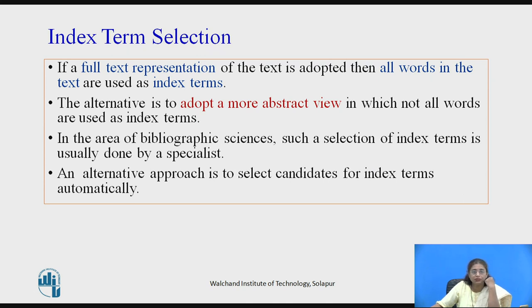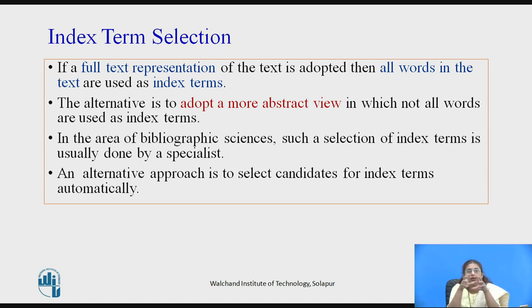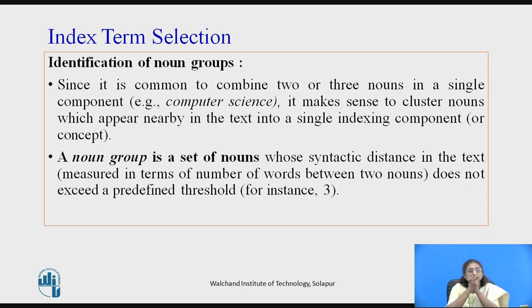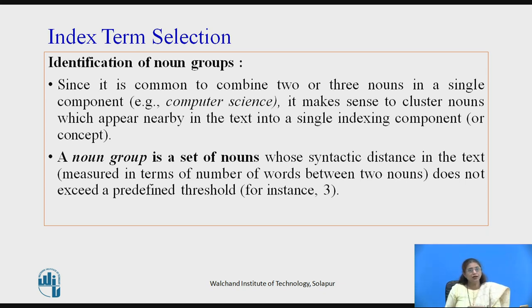Next is index term selection. After getting these terms, which words should be selected? If it is a full text representation, then all words in the text are used as index terms. If we prefer a more abstract view, not all words are used as index terms. In bibliographic sciences, selection of index terms is usually done by a specialist, or alternatively done automatically using algorithms. Generally, nouns are the index terms, but sometimes two or three nouns are combined into a single component — for example, 'computer' and 'science' separately become 'computer science' as a single group.